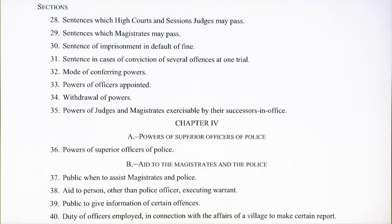Chapter 3 talks about Powers of Courts — because if the courts have to perform their duties, they need to be given certain powers. It covers courts by which offenses are triable, jurisdiction in the case of juveniles, sentences which High Courts and Sessions Judges may pass, and sentences which Magistrates may pass — defining who has the power to do what. It also covers sentence of imprisonment in default of fine, sentences in cases of conviction of several offenses at one trial, mode of conferring powers, powers of officers appointed, withdrawal of powers, and powers of judges and magistrates exercisable by their successors in office.